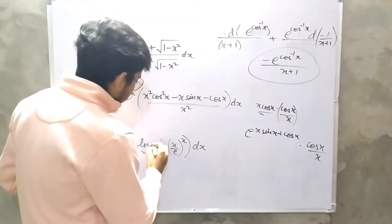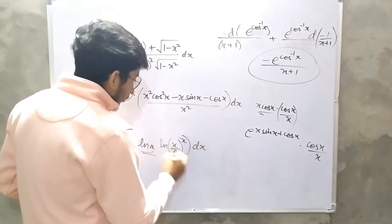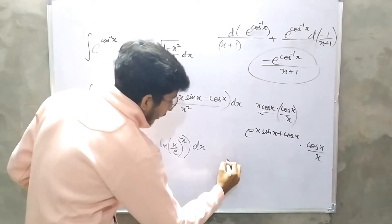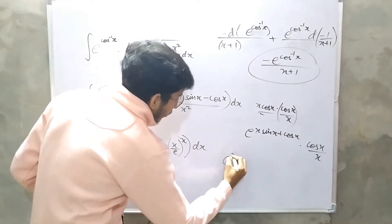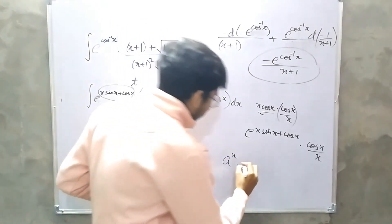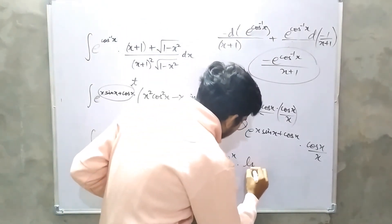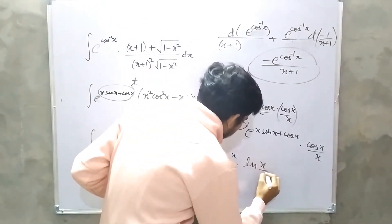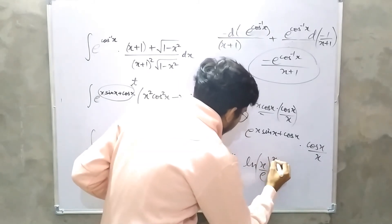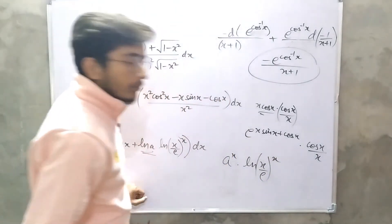My answer will come: this multiplied by this, this multiplied by this — a to the power x, multiplied by ln x, upon e. The answer: 1 to the power x.